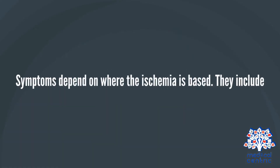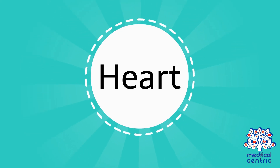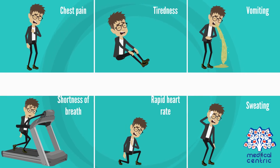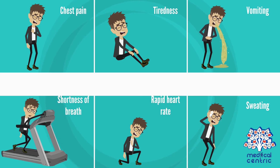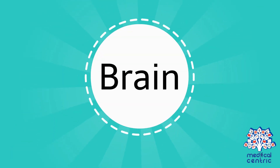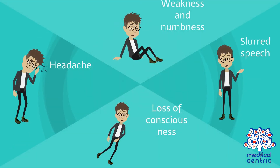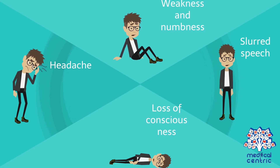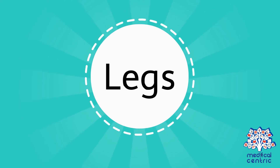Symptoms depend on where the ischemia is based. Heart symptoms include chest pain, tiredness, vomiting, shortness of breath during exercise, rapid heart rate, and sweating. Brain symptoms include headache, weakness and numbness, slurred speech, and loss of consciousness.